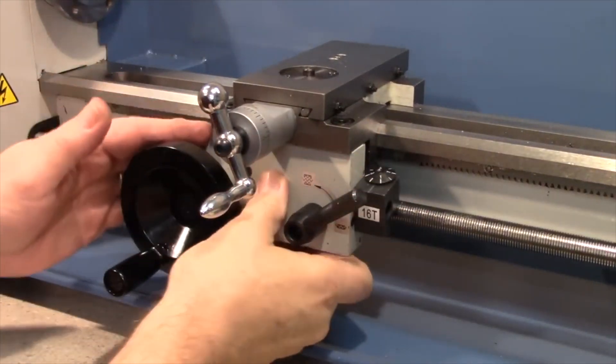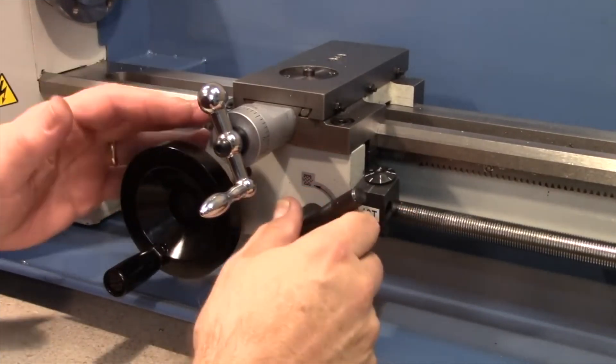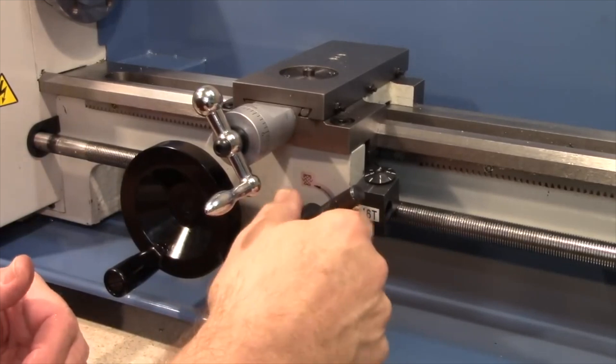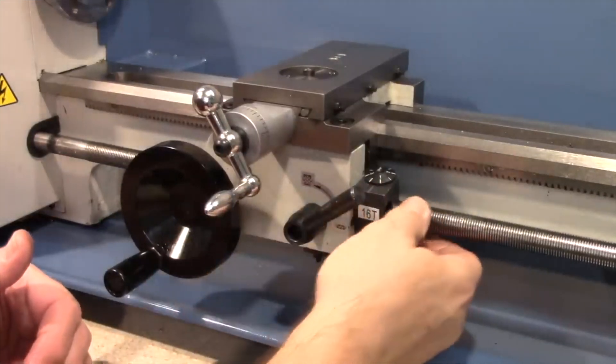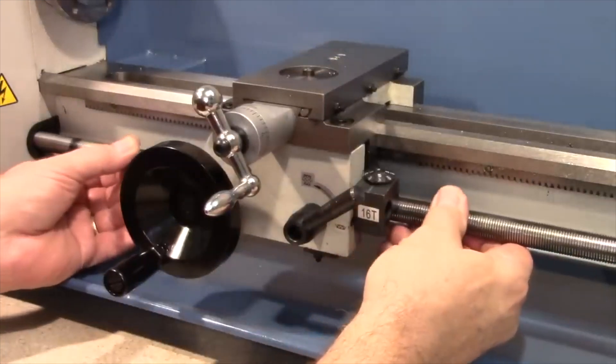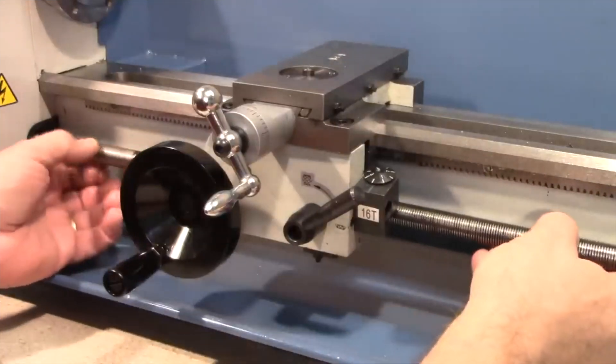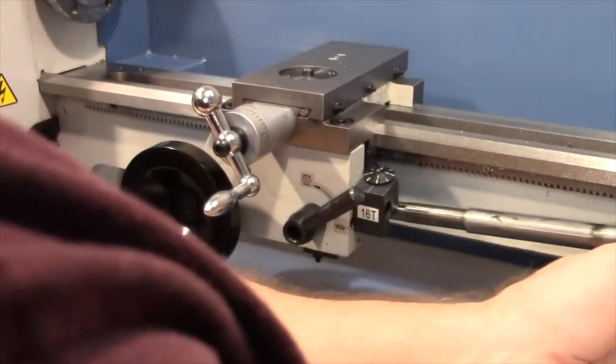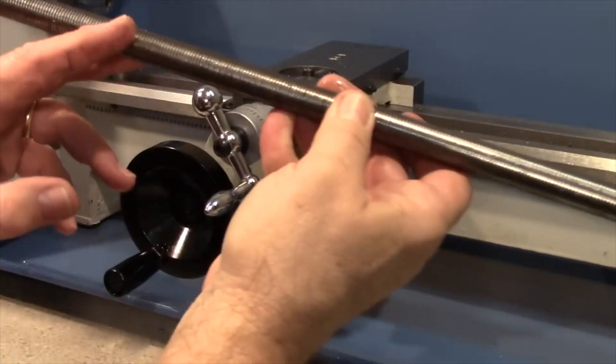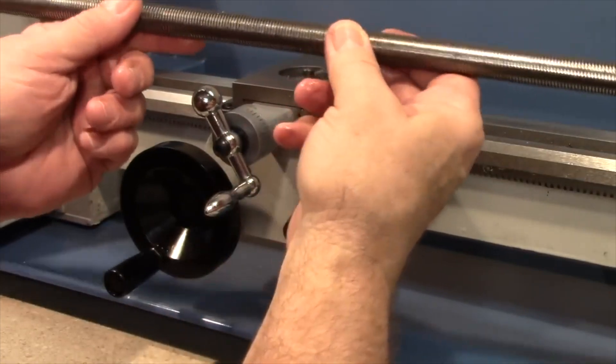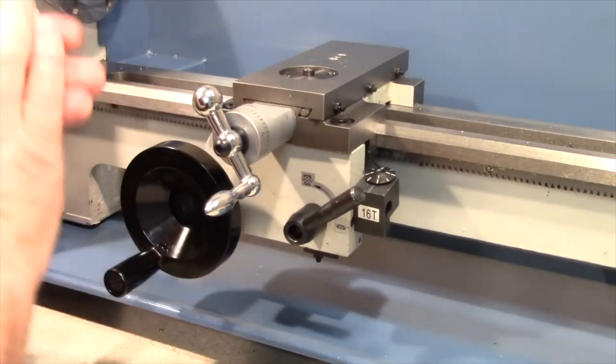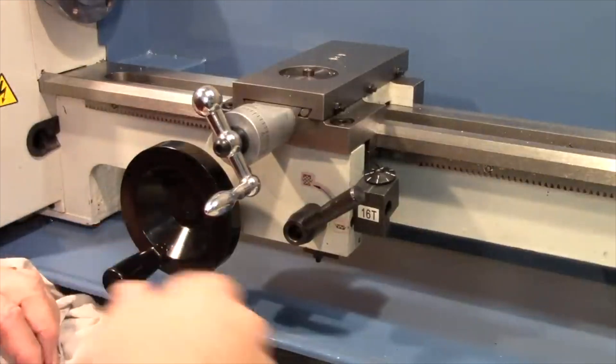This part of the lathe right here is called the apron, and back behind the apron is a device called the half nut. It clamps onto the lead screw when this lever is in the down position. So in order to remove the lead screw you have to make sure the half nut lever is in the up position. Now I want to carefully slide this out to the right, and I'm actually sliding it out between the two halves of the half nut. You want to be careful not to bang up these threads any more than necessary.